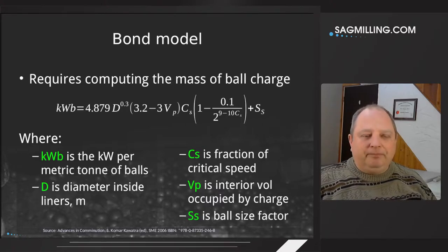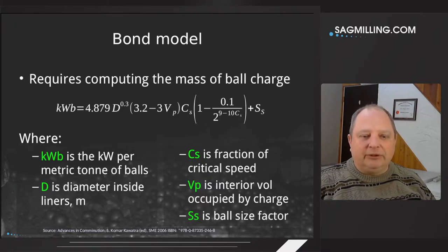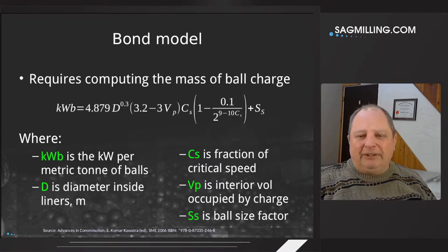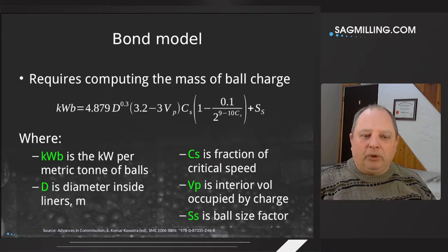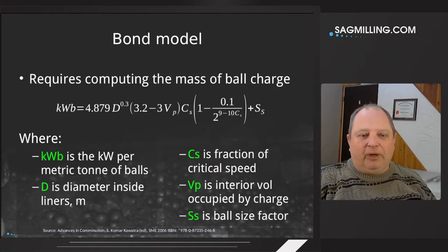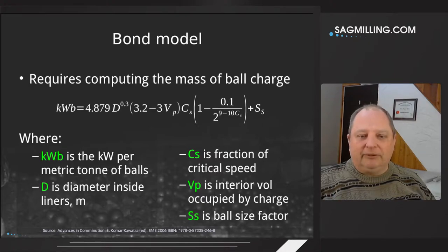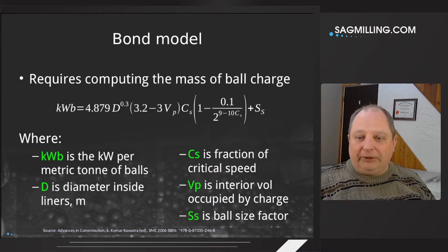We'll start with the Bond model. There are a bunch of different versions going back through the ages. This particular version comes from 2006, but all of them have the same form: you work out how many kilowatts of power draw to expect per ton of balls in the mill. We've got geometric parameters like mill diameter, speed as a fraction of critical speed, volume measurements for the charge inside the mill, and a factor for ball size.